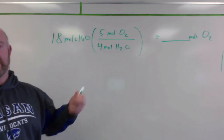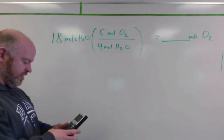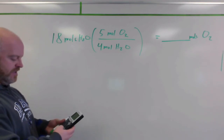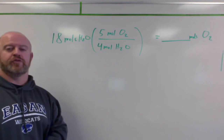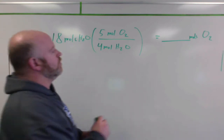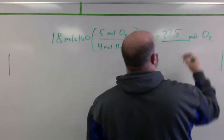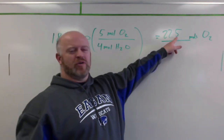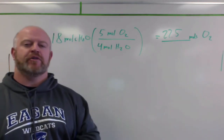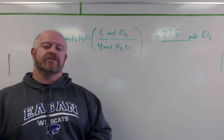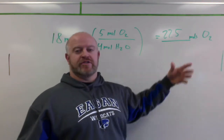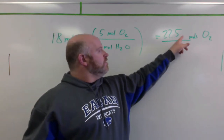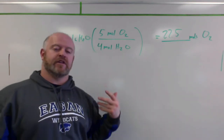Our math becomes 18 times 5 divided by 4. We take 18 times 5, that's 90, then divide by 4, and we get 22.5. So we end up with 22.5 moles of oxygen needed. Can we have half a mole of oxygen? Sure, that's not a problem. We don't have to have whole numbers for our answers here, because we don't need exactly 6.02 times 10 to the 23rd atoms — we can have half of that. It's fine to have decimals for moles in problems like this.